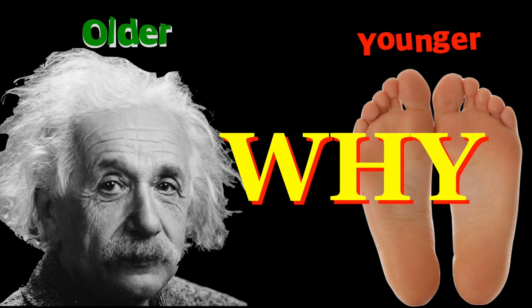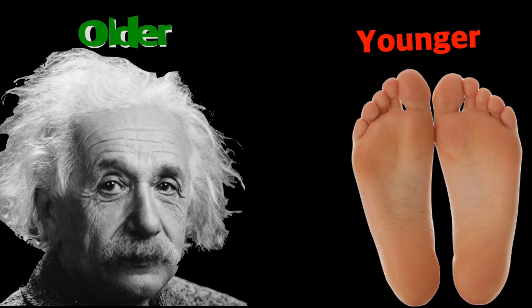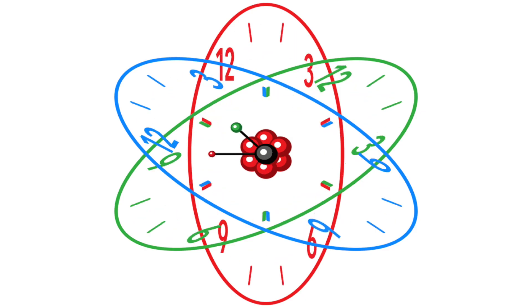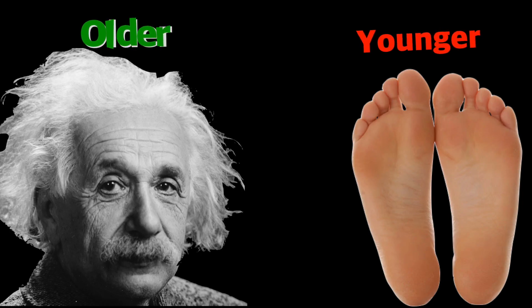So in 2010, scientists used atomic clocks and they established by way of experimentations that over a lifetime of, let's say, 80 years, your feet and your head will age differently. So how did they do the experiment?